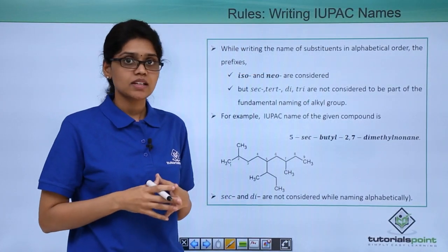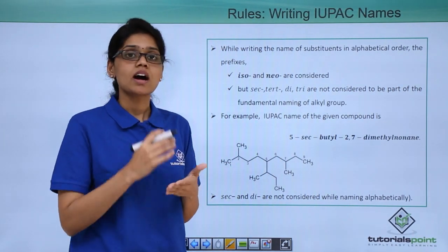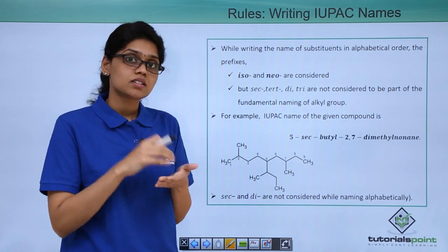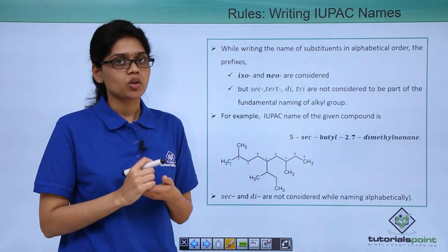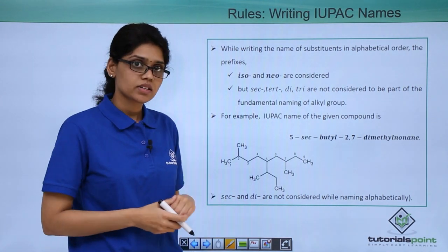The third rule to consider is that while writing the name of substituents in alphabetical order, iso and neo are the only two alkyl substituents to be considered while sec, ter, tri, di etc. will not be considered. To understand that let's take a quick example at this structure here.